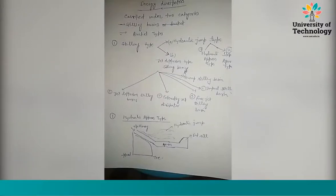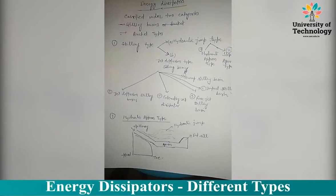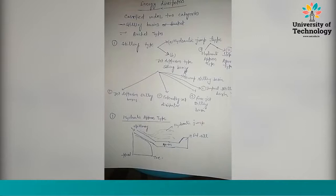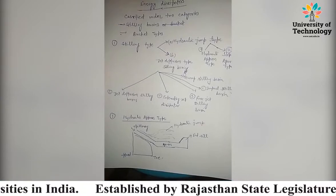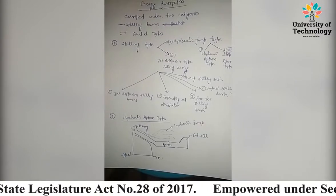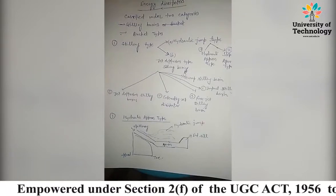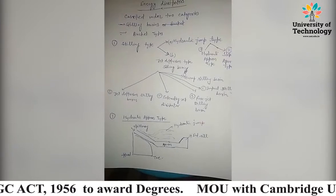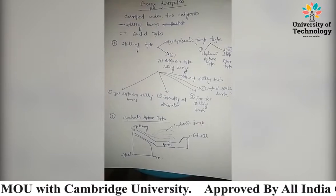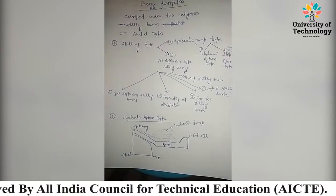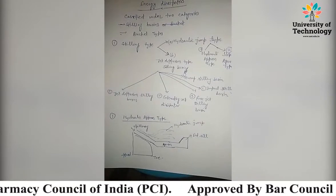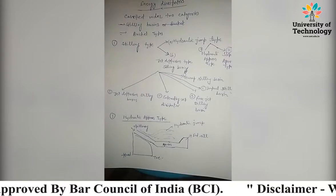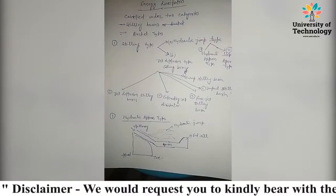In this part of the video we will study about energy dissipators and their different types. When water flows through a dam's spillway, it has potential energy initially. As it flows through the spillway, this potential energy converts into kinetic energy. Energy dissipators are structures used to decrease this kinetic energy so that the surface of the dam or spillway structure is not damaged.